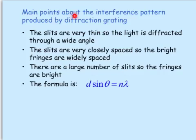Main points about the interference pattern produced by diffraction grating. The slits are very thin, so the light is diffracted through a wide angle. The slits are very closely spaced, so the bright fringes are very widely spaced. They're really spread out. There are a large number of slits, so the fringes are bright.